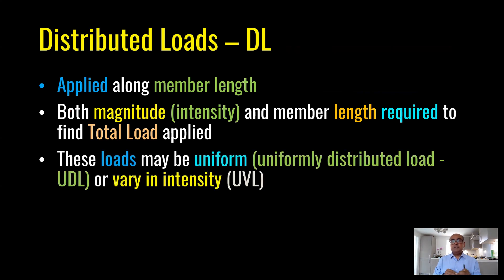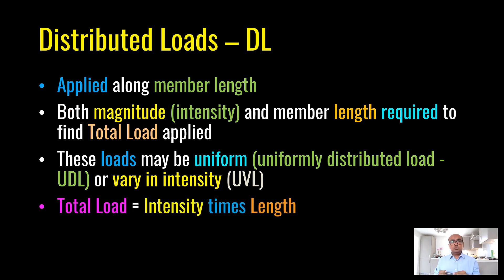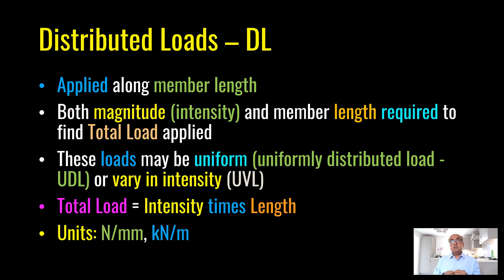Loads can be uniformly distributed load (UDL), meaning intensity does not vary along the length of the beam, or uniformly varying load, meaning intensity on one end is smaller than on the other. Total load is intensity times length and is represented in kilonewtons. Units are newton per millimeter, but the more common unit is kilonewton per meter.